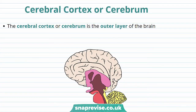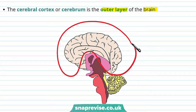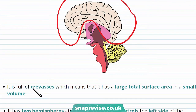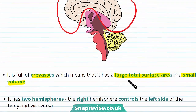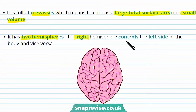First, let's talk about the cerebral cortex, or cerebrum. This is the outer layer of the brain — in this diagram it's shown as this layer here. As you can see, it looks a bit wrinkly, and this is because it's full of crevasses, which means it has a large total surface area in a small volume.